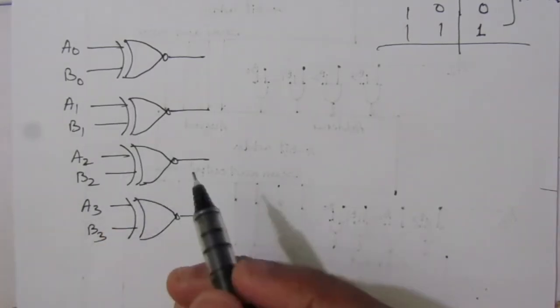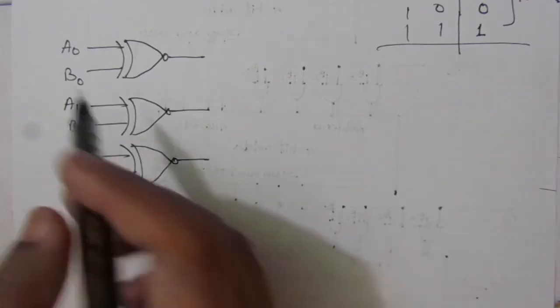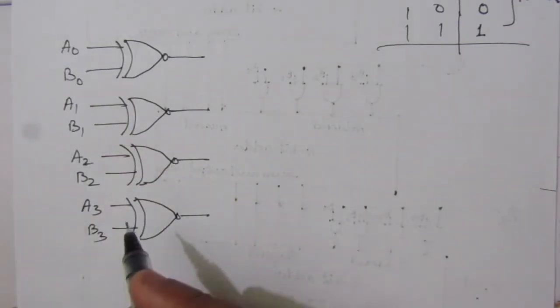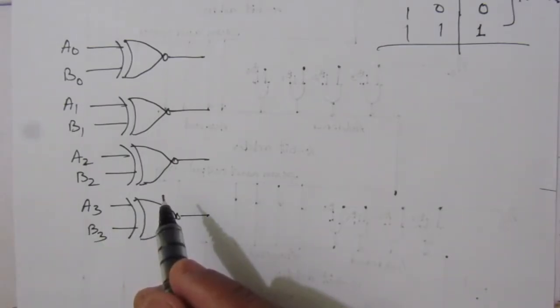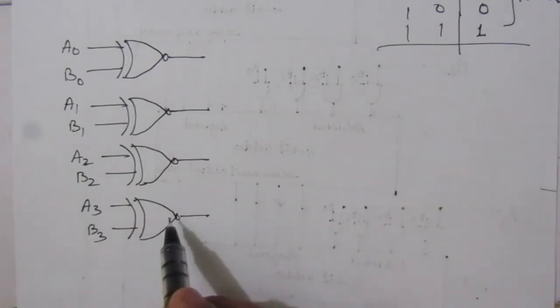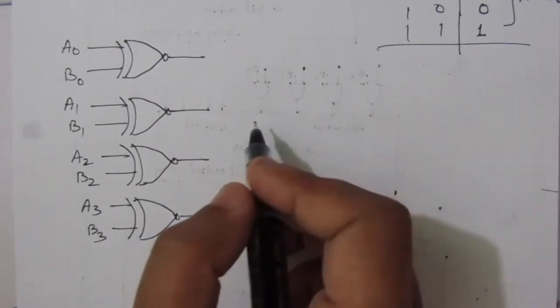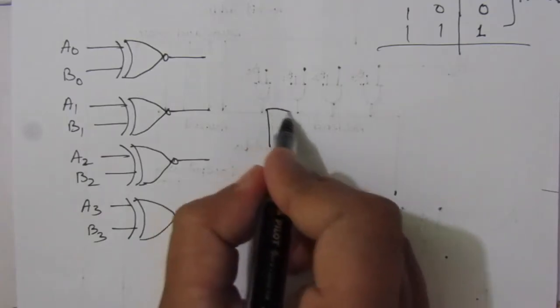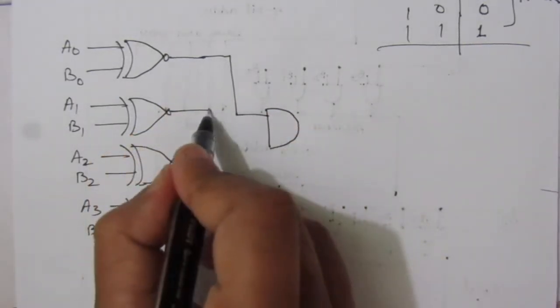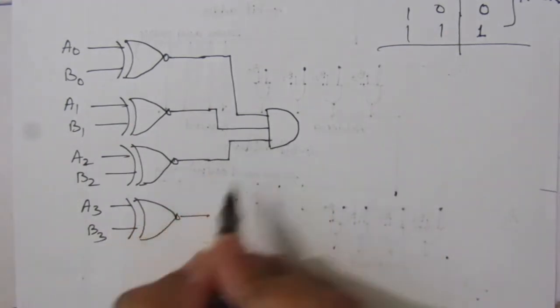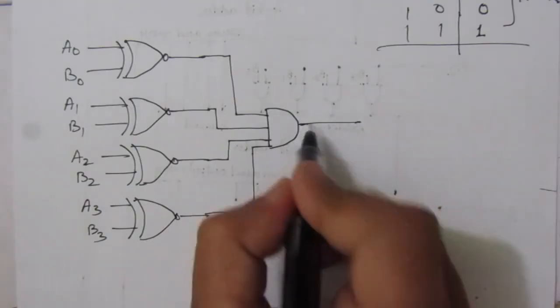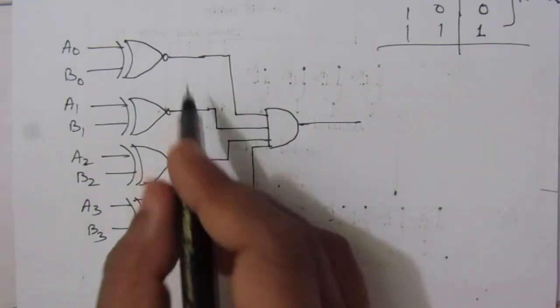So as per the question, we have to design a circuit that outputs 1 whenever all these 4 bits are equal. That means this circuit should give output equal to 1 whenever all these 4 outputs of the XNOR gates have a 1 value. So if we use an AND gate, this is one input, this is second input, this one is third input, and this is the fourth input. This AND gate is the multiplication between these 4 numbers.